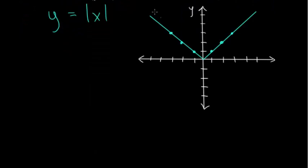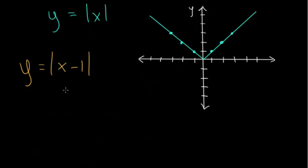We have our parent function graphed in blue. Now we want to start adding or subtracting on the inside and see what happens. Let's say we have y equals the absolute value of x minus one. To understand this, we could just start plotting points. The key point is when x equals positive one — if you plug in one, you get zero, and the absolute value of zero is zero. That's going to be our corner point again, since we're not adding or subtracting on the outside, so it won't shift up or down.